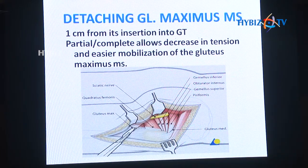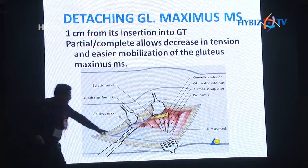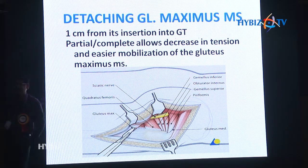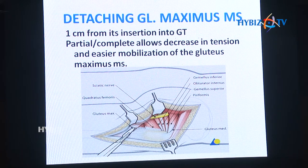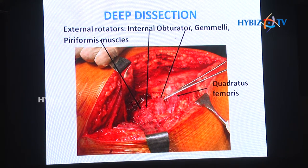The superior and inferior gluteal neurovascular bundles supply the gluteus medius, minimus, and maximus respectively. To avoid stretching over the gluteus maximus, you should cut approximately one centimeter from the insertion of the gluteus maximus from the trochanter so that there is relaxation, and you can then see the external rotators.